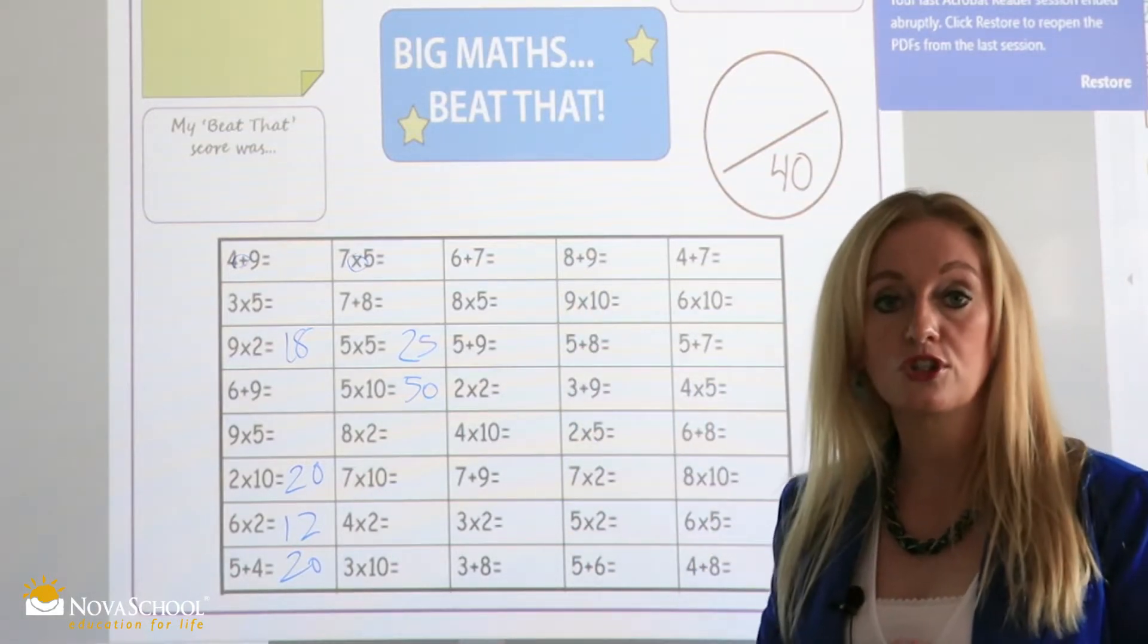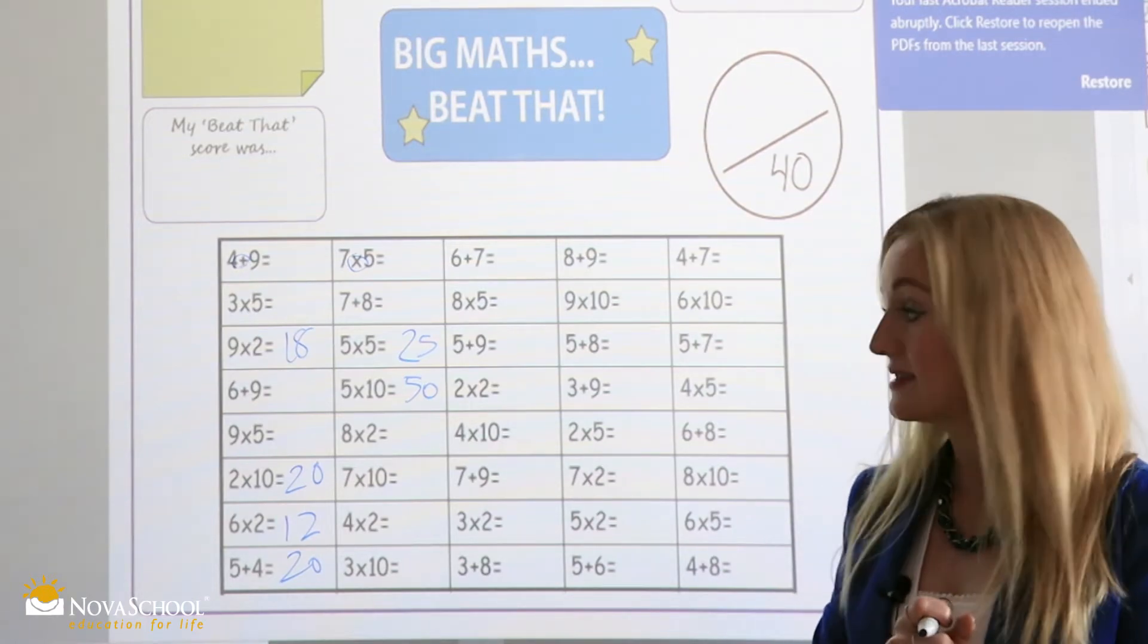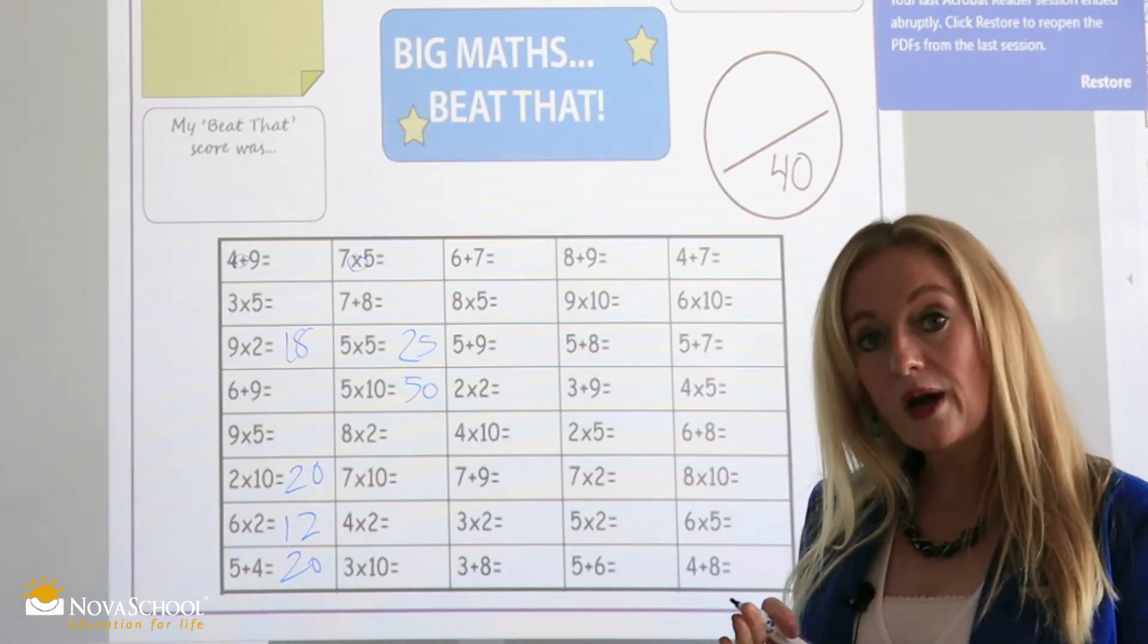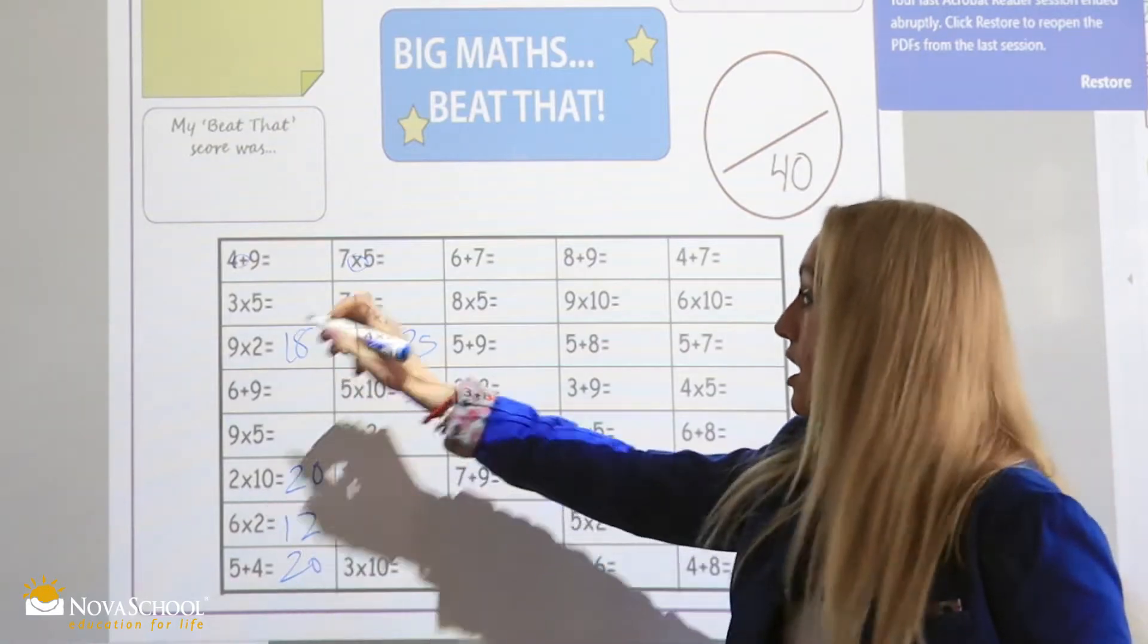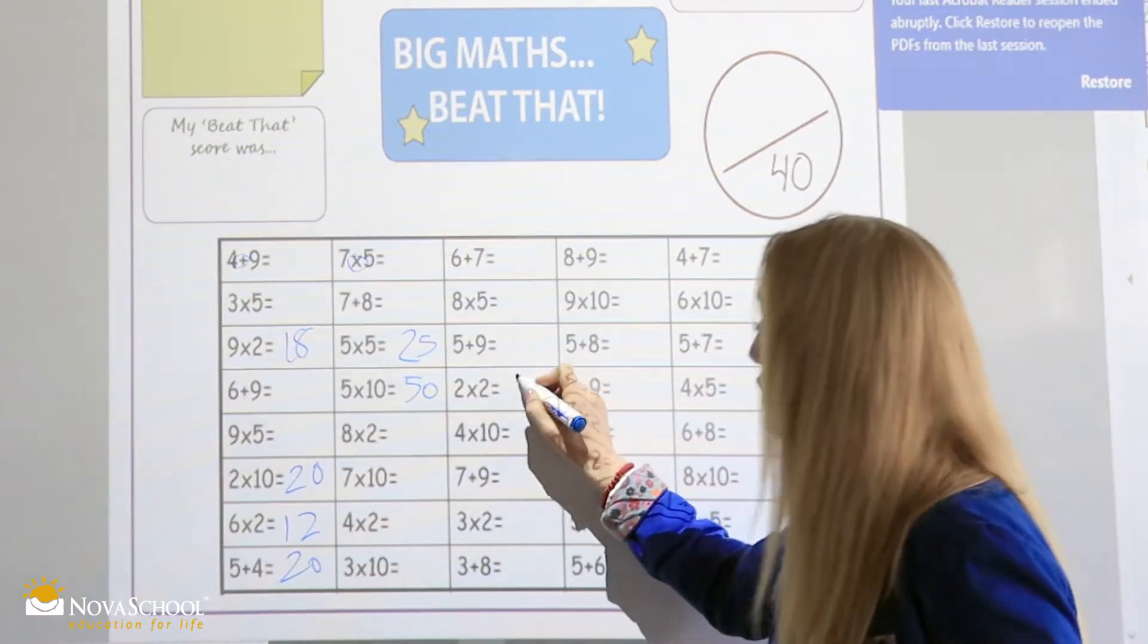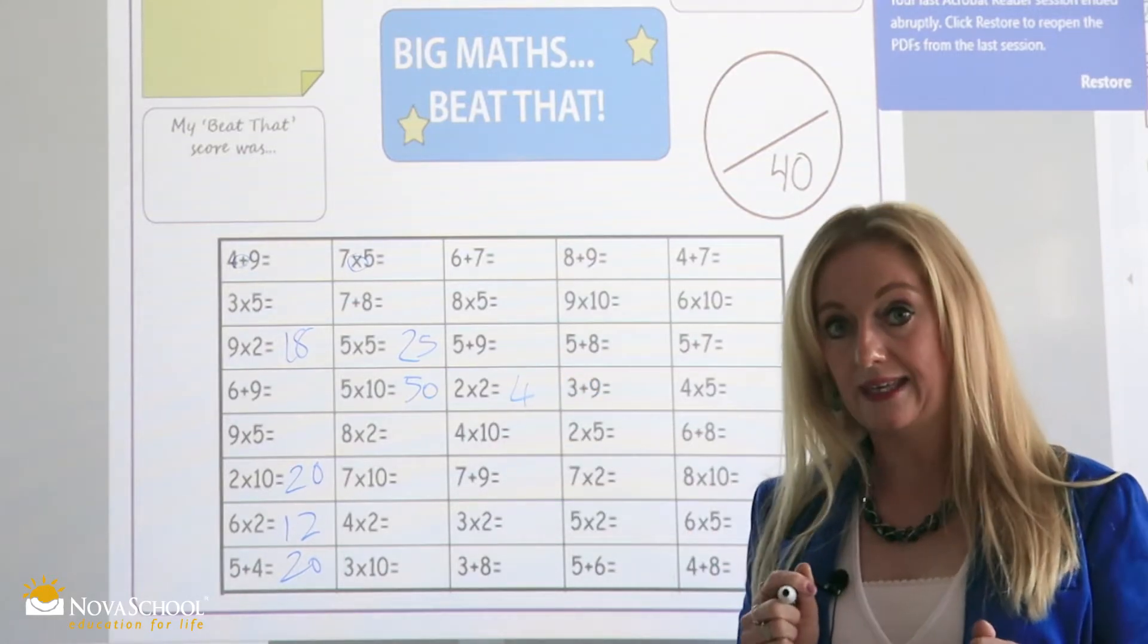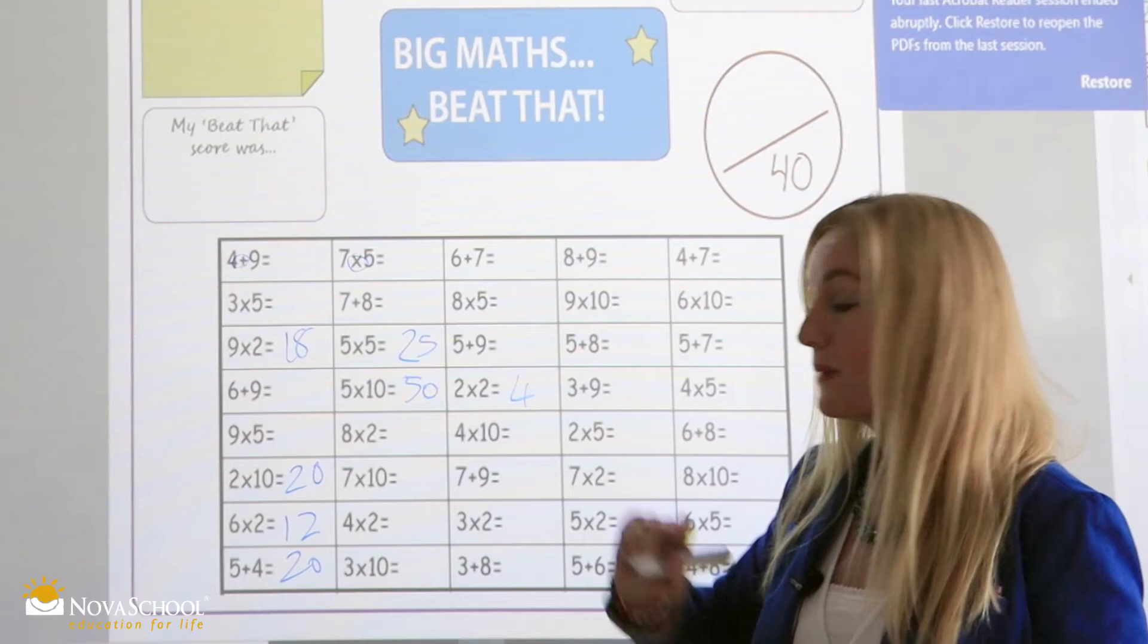We want our children to practice all the time, their times tables and their additions. So, whichever way works for your child, across, down, diagonal, answering all of the questions that they know straight away. Find the multiply by tens. Find the multiply by twos.